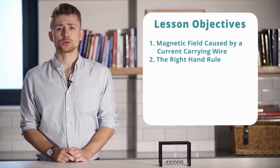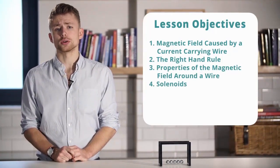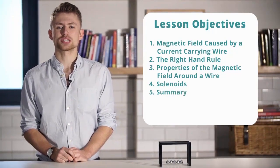We'll look at the right hand rule, the properties of the magnetic field around a wire, solenoids, and then we'll finish with a summary.